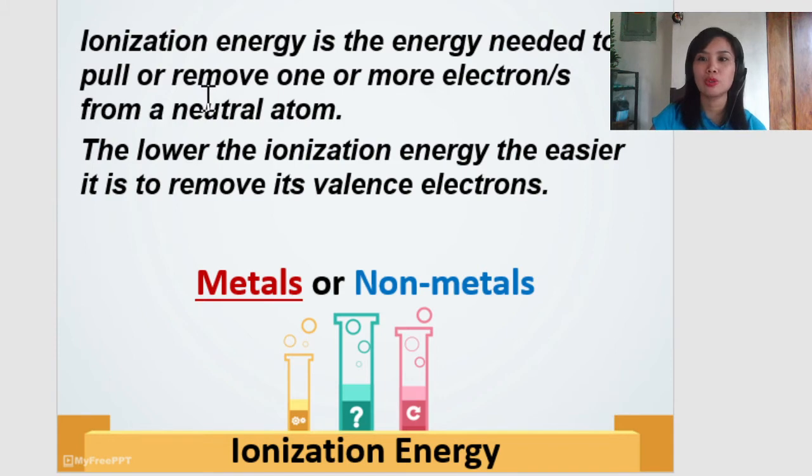Ionization energy, this is the energy needed to pull or remove one or more electrons from a neutral atom. So, the lower the energy or the lower the ionization energy, the easier to remove its valence electron. So, we have here, which of these metals or non-metals have low ionization energy? Of course, metals. They are easier to give electrons. You can remember our ions, right? Once they will lose electron, they will become cation. And that is what they are easy to remove, the valence electrons.